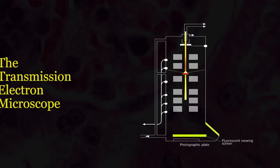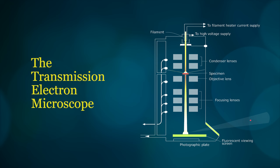The transmission electron microscope is capable of much greater magnification, up to one million times, and has a resolving power approximately 200 times greater than the light microscope.